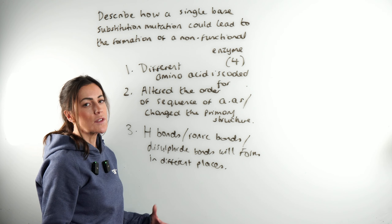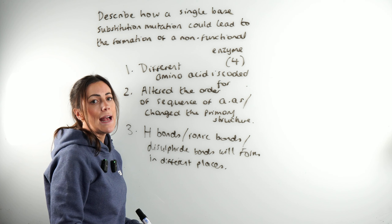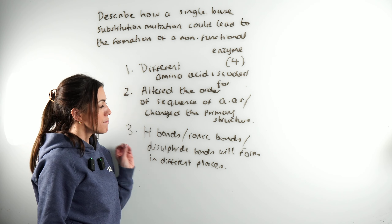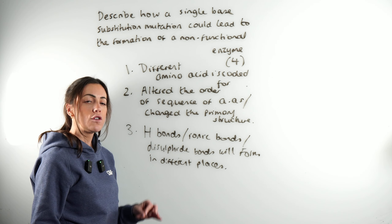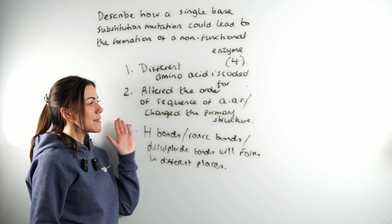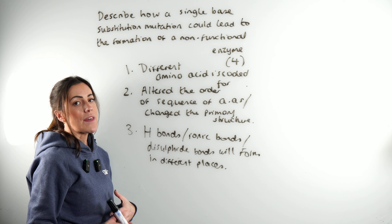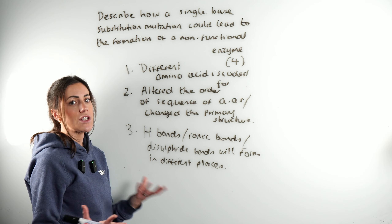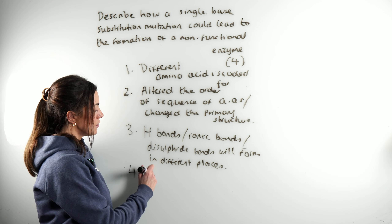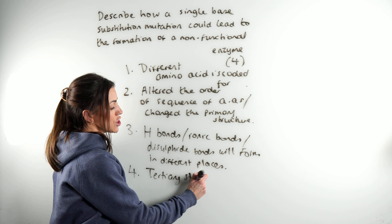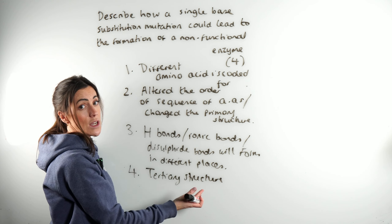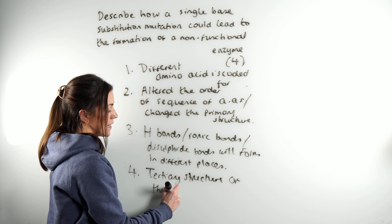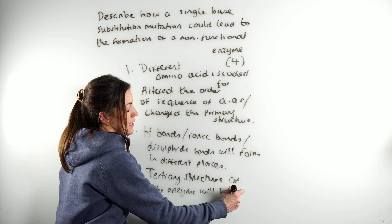You don't have to name all three of those bonds, but you do have to name at least one. A lot of students make the mistake of just saying 'bonds' or not mentioning them at all. Make sure you name one of the bonds involved in the formation of the tertiary structure. Because you've got a different order of amino acids, the R groups are in a different order, so these important bonds form in different positions. Ultimately, the tertiary structure of the enzyme will be different.